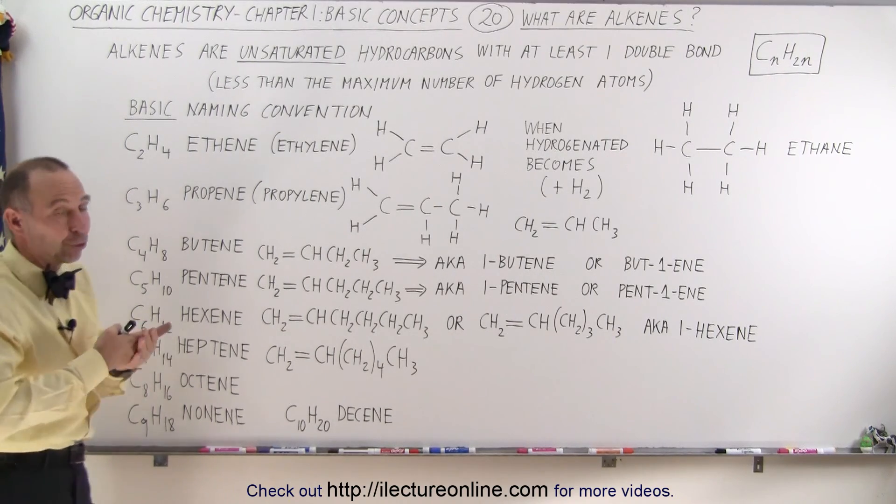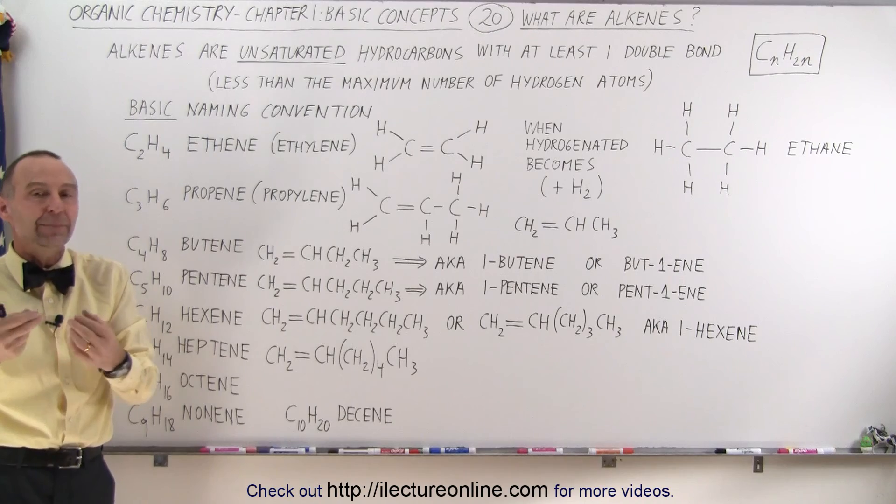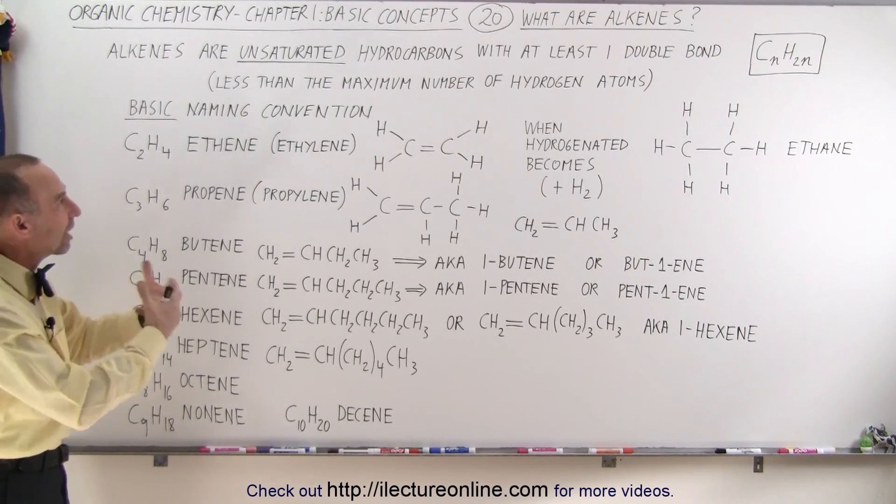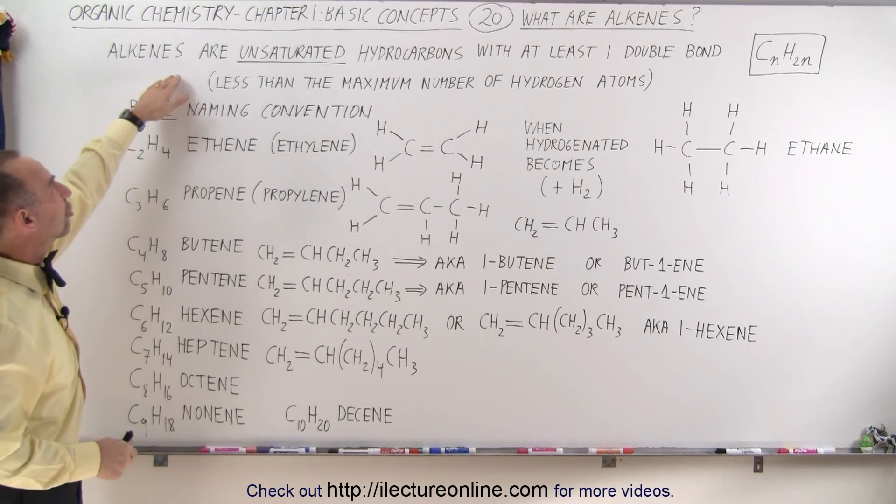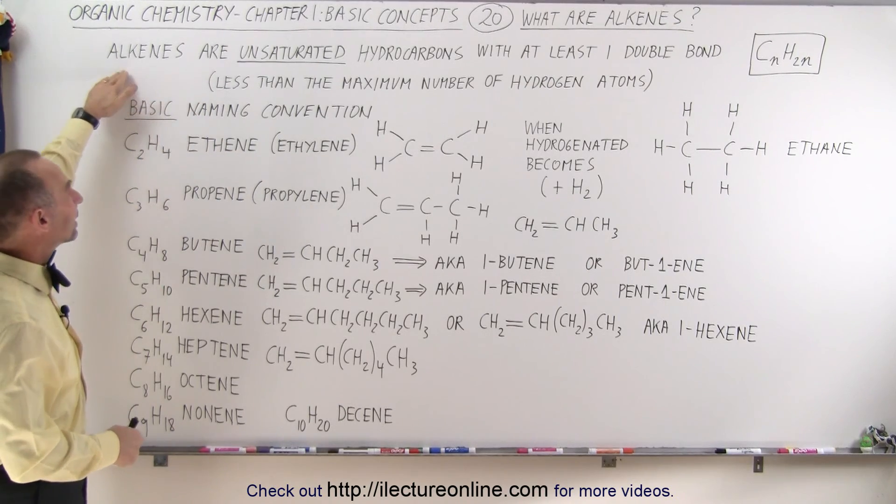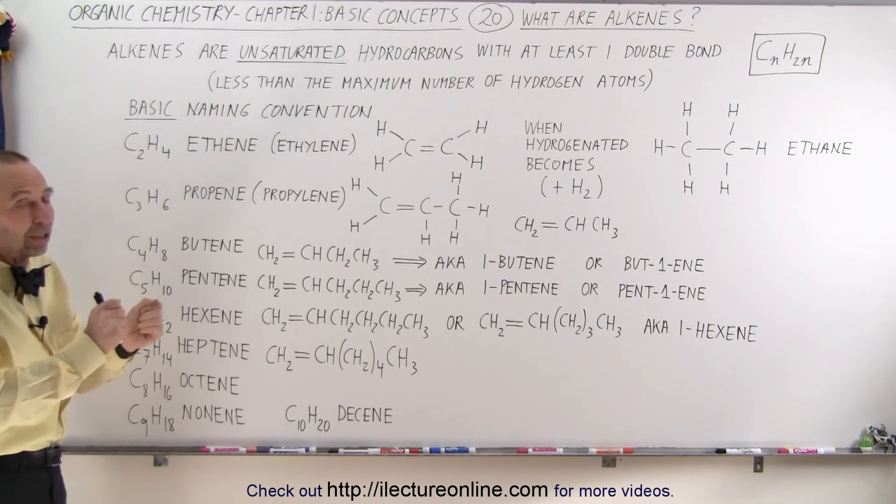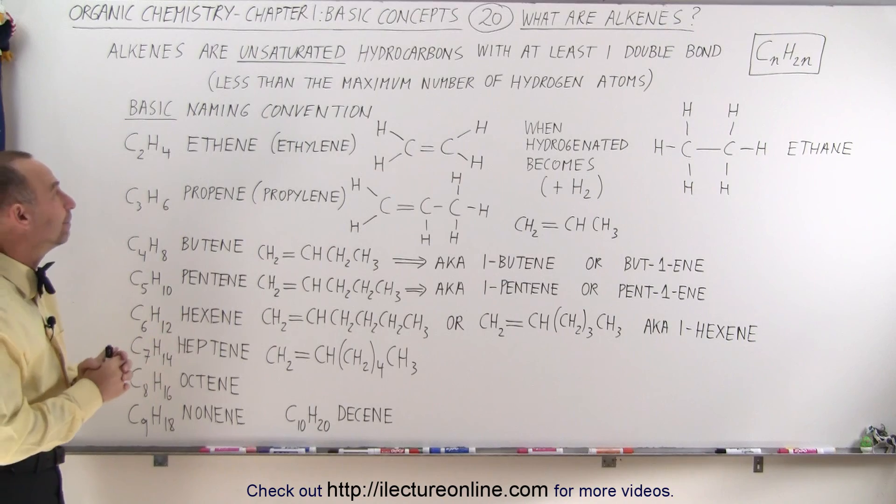Now we could actually turn an alkene into an alkane by hydrogenating it, by hydrogenating the hydrocarbon or fully saturating the hydrocarbon by adding additional hydrogens. We can go from an alkene to an alkane, and that's basically the difference. We break the double bond, add a couple more hydrogens, and now it's an alkane.